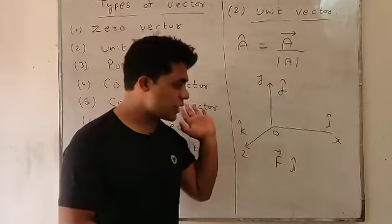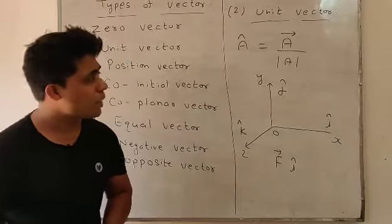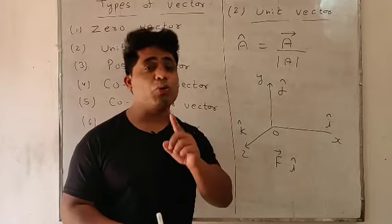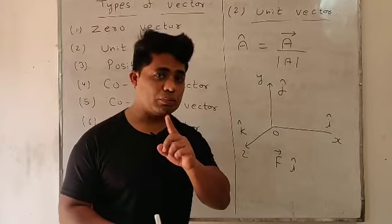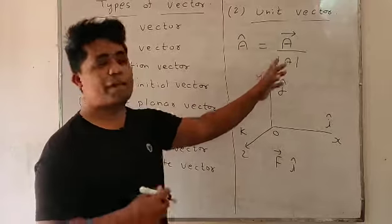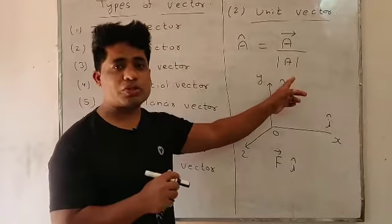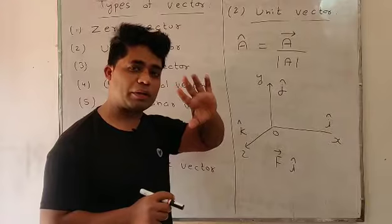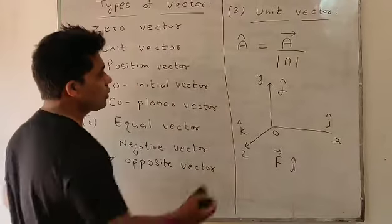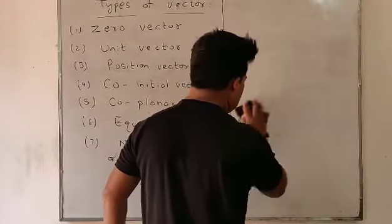So there are three unit vectors — i-cap, j-cap, and k-cap — indicating the x, y, and z axes respectively. To summarize: unit vector refers to those vector quantities that have unit magnitude, and when a vector is divided by its modulus, the result is a unit vector, represented by the cap notation.